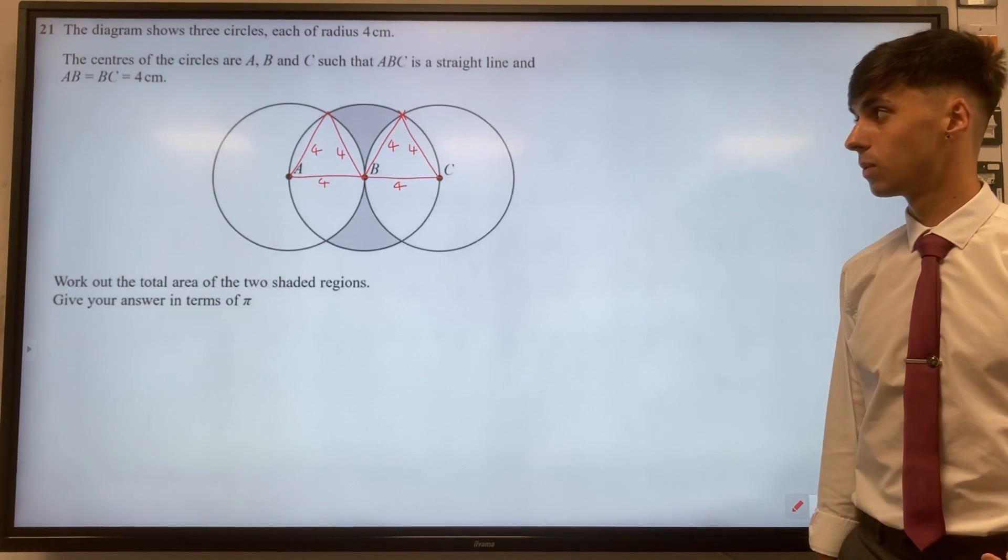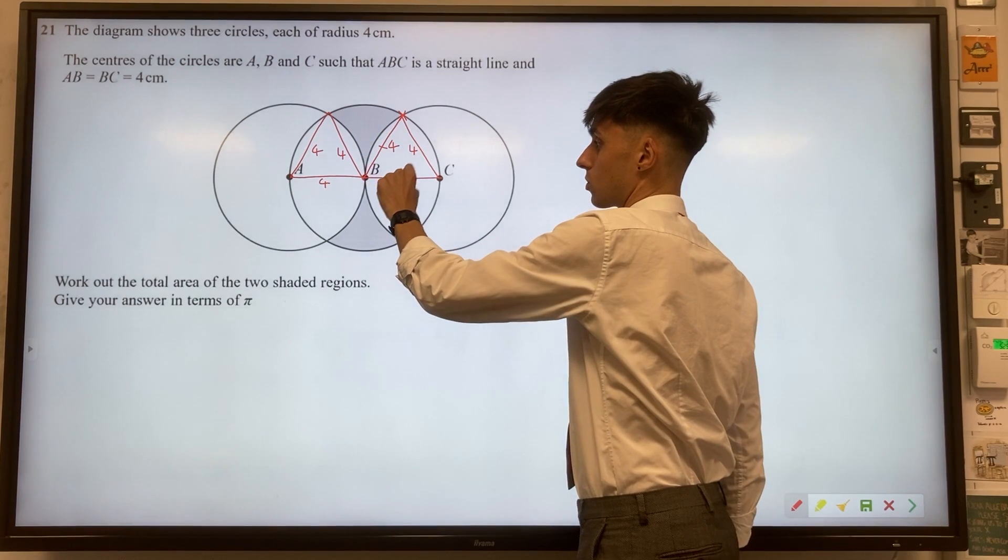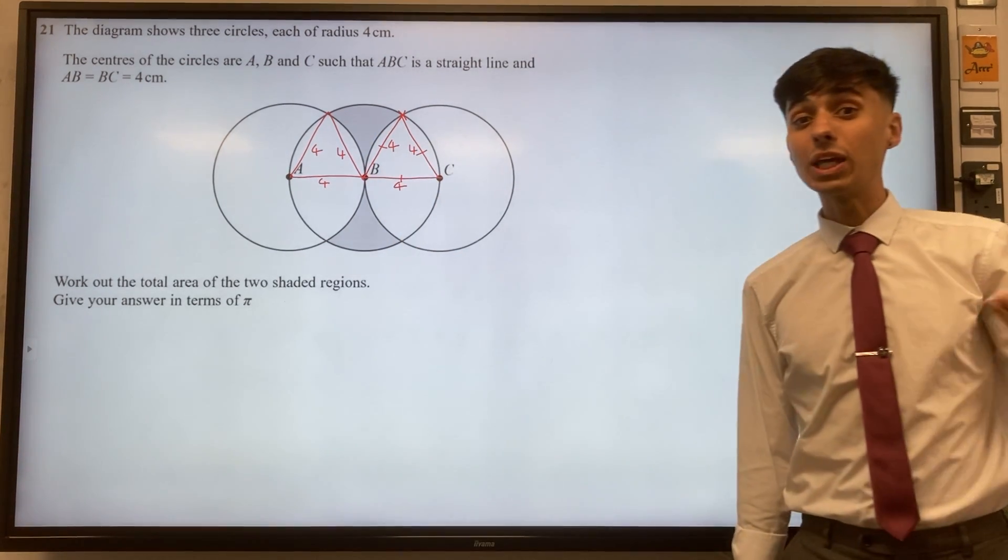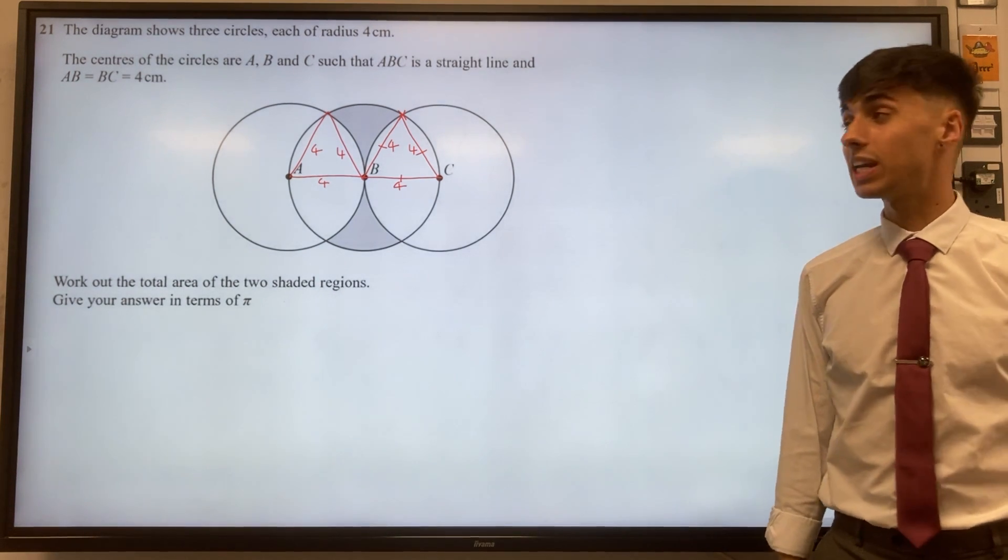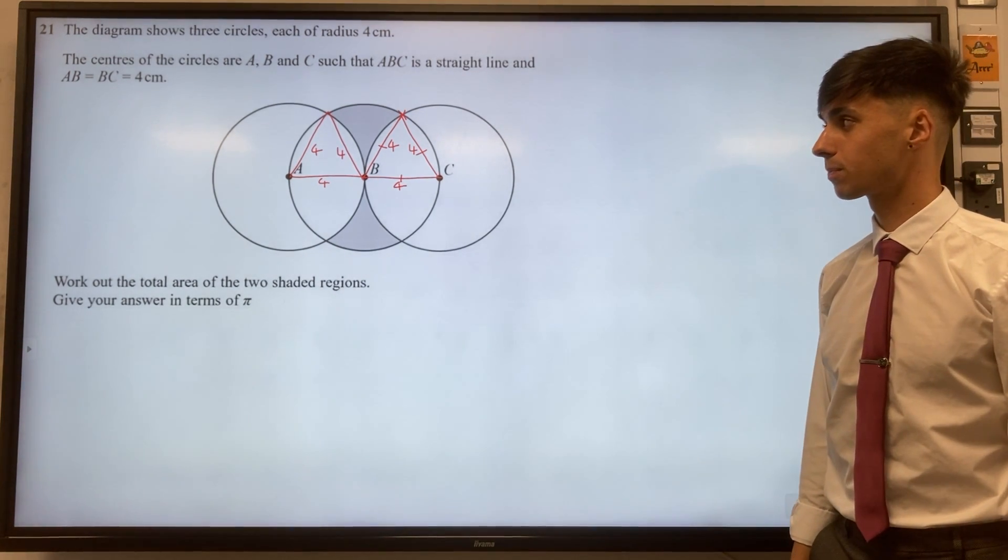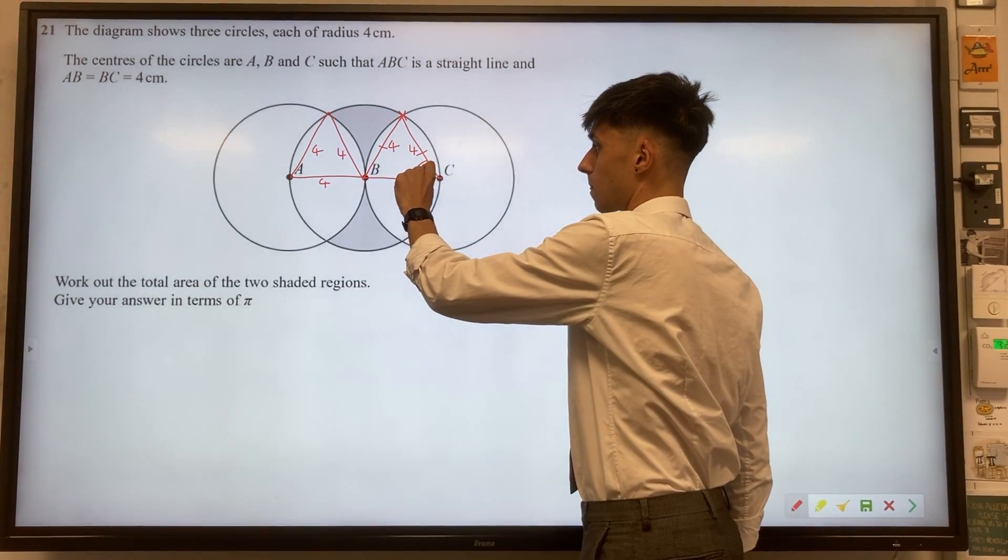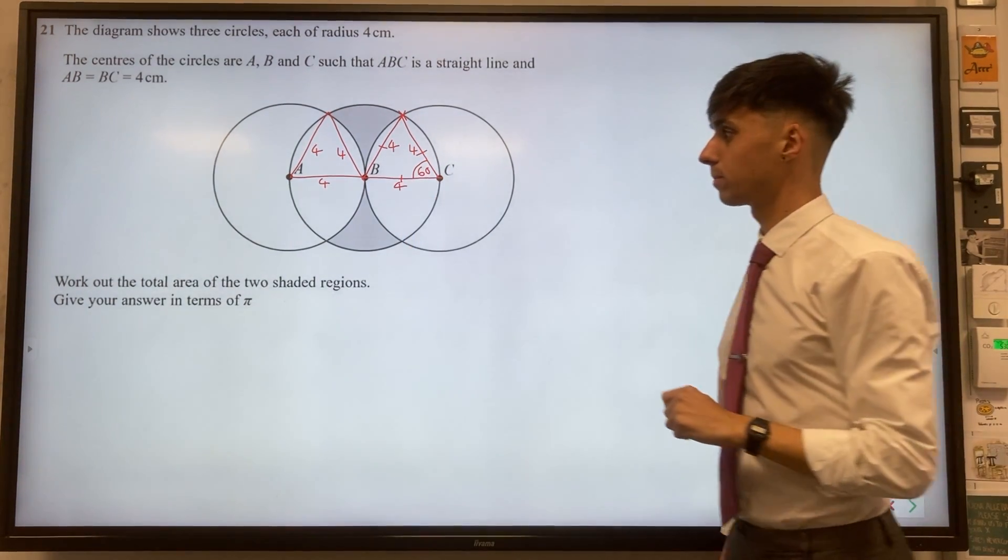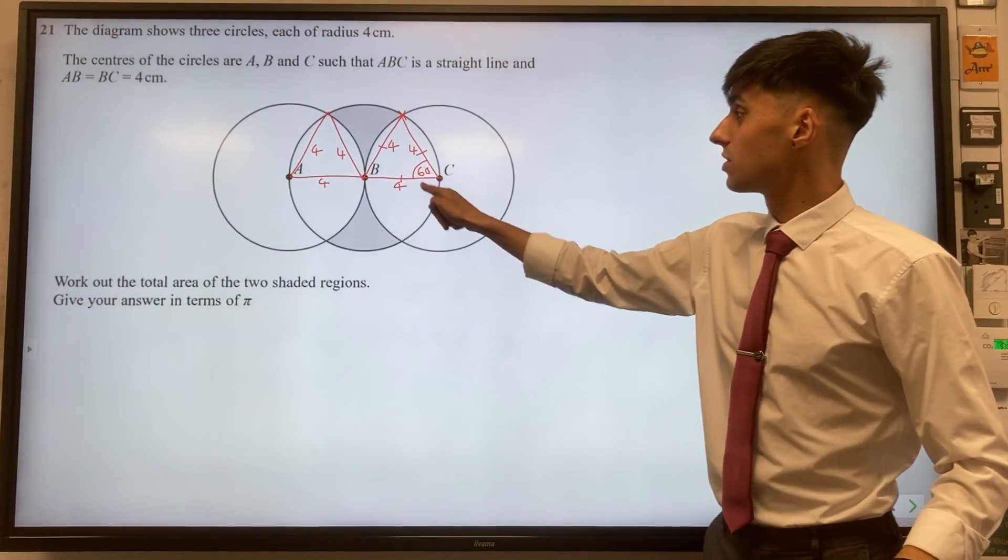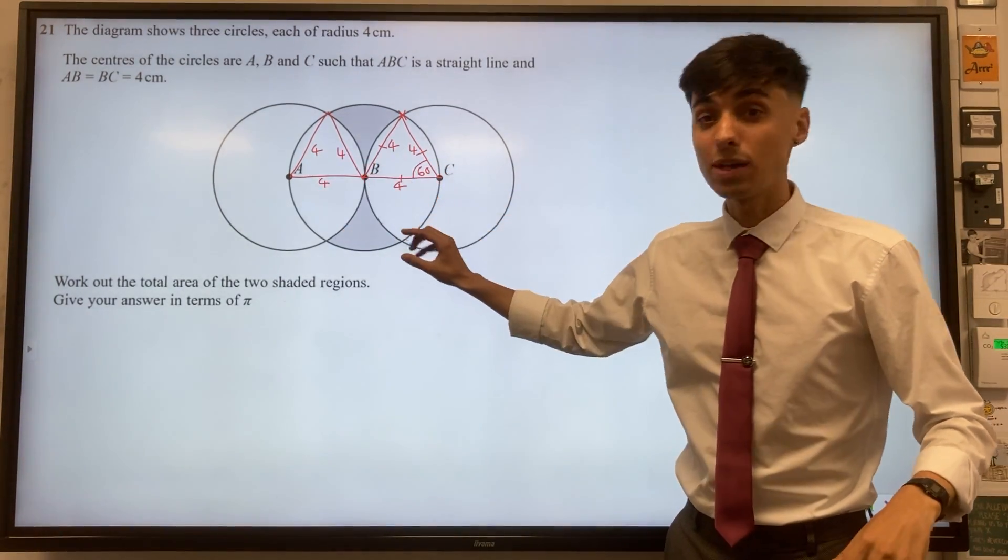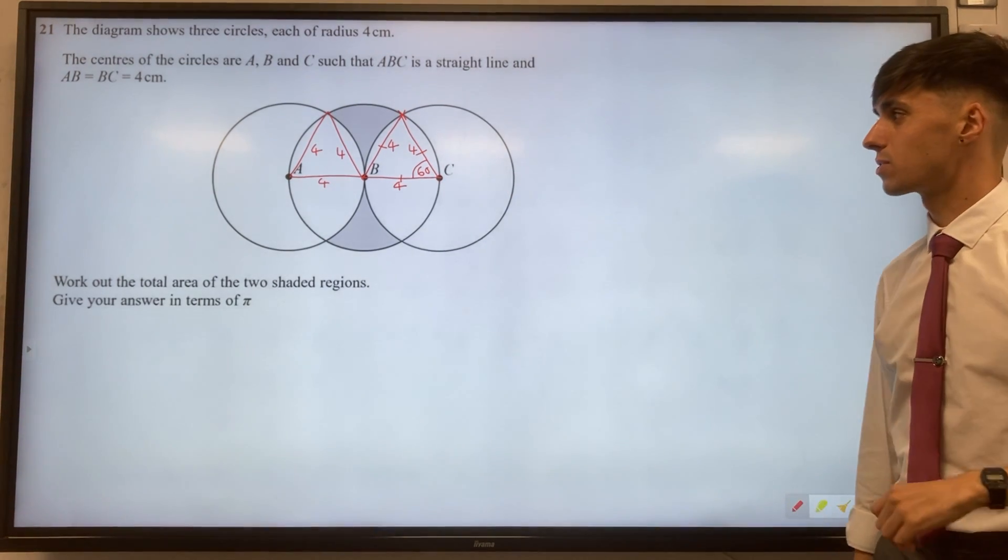If all three sides are the same, we've got equilateral triangles. The angles here are going to be really helpful for us later. For an equilateral triangle, we've got 60 degrees, and likewise over this side we've got 60. Down here we have a symmetrical image also with 60s, but we don't need to add all of those at the moment.